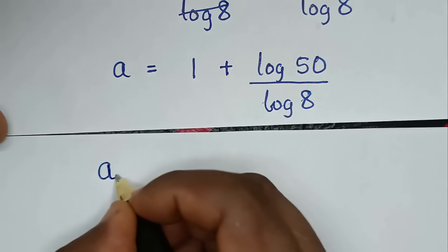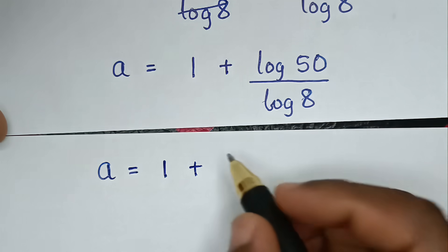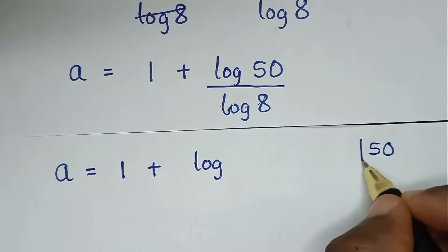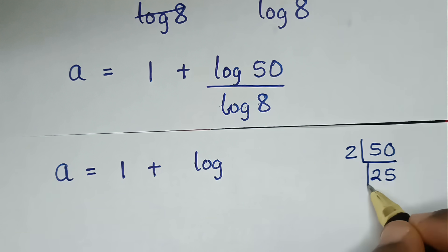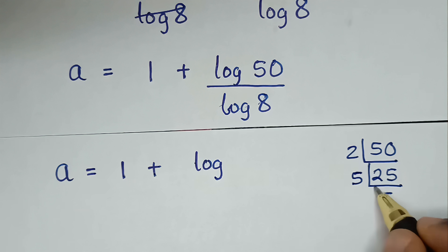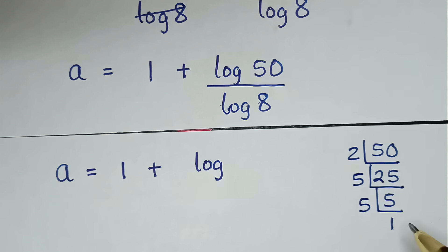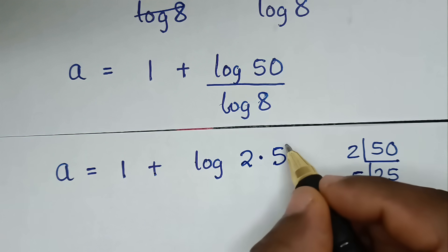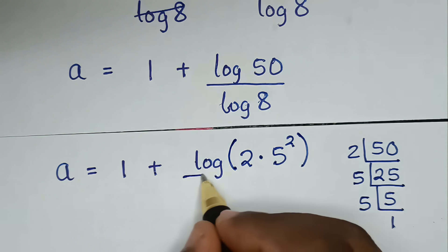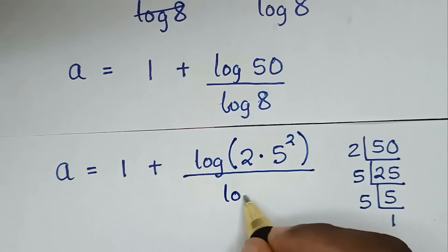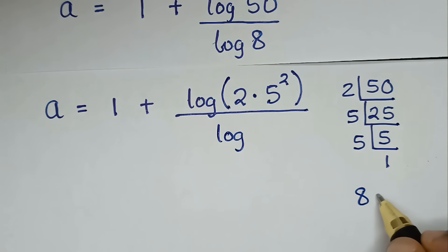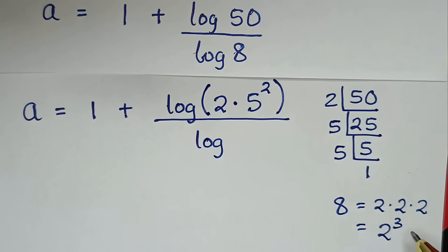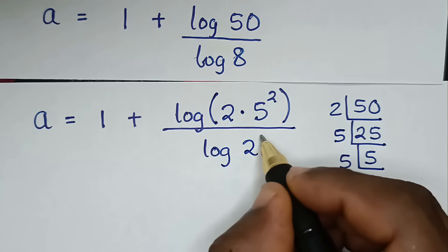Then, in the next step, it will be a is equal to 1 plus log of 50 over log of 8. We find the prime factors of 50: 50 is divisible by 2 giving 25, then 25 divided by 5 is 5, then 5 divided by 5 is 1. So 50 is the same as 2 times 5 times 5, which is 2 times 5 squared. For log of 8: 8 in prime numbers is 2 times 2 times 2, which is 2 power of 3, so log of 8 becomes log of 2 power of 3.